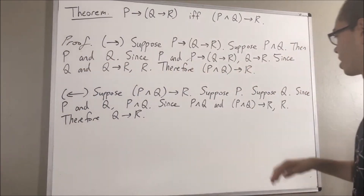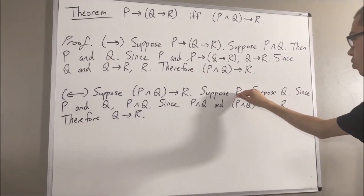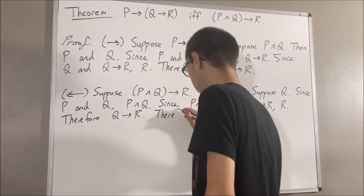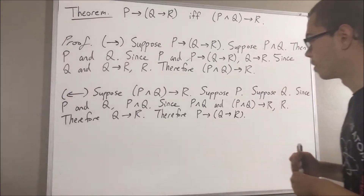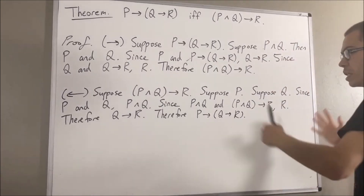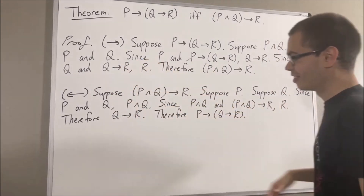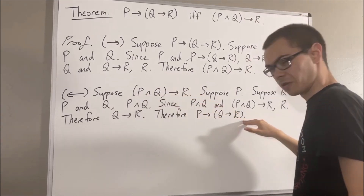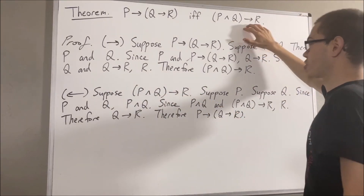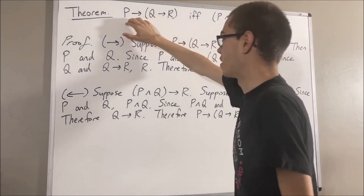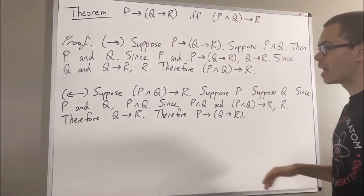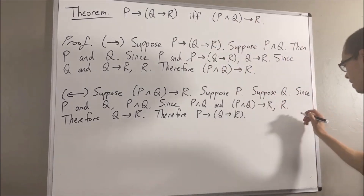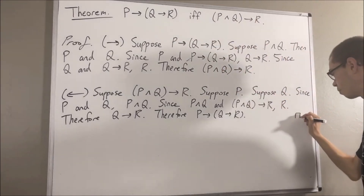And now we see that under the assumption P is true, it follows that if Q is true, then R is true. Putting this all together, we see that under the assumption that (P and Q) implies R is true, we have that P implies (Q implies R) is true. So we have proven both directions of the if and only if, and this completes the proof.